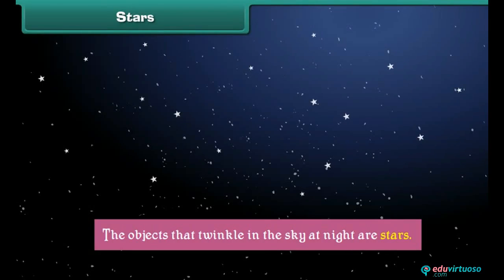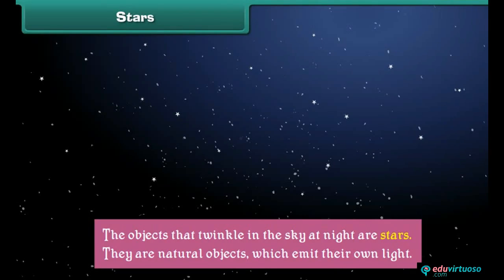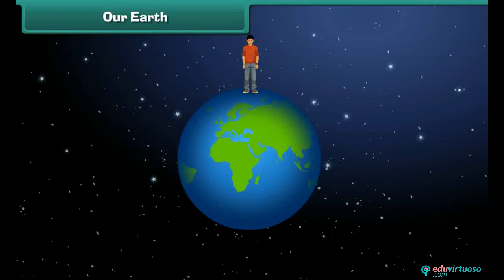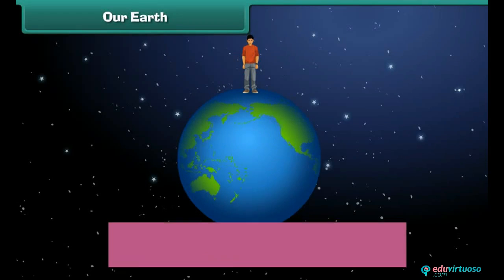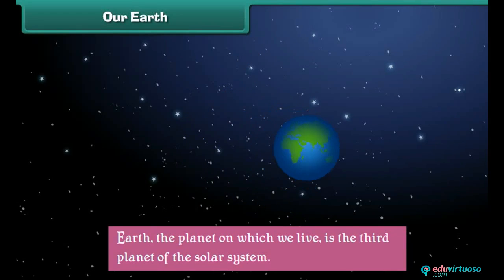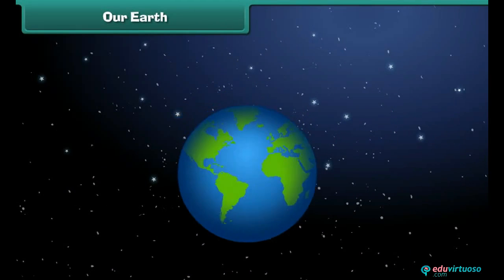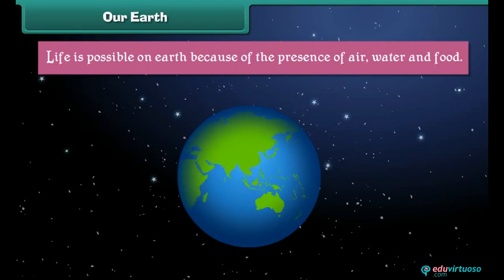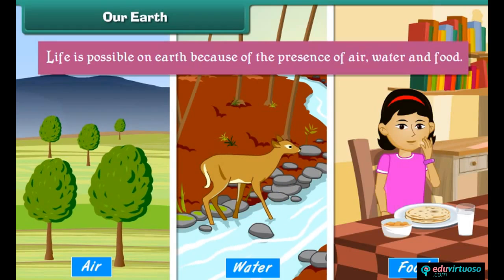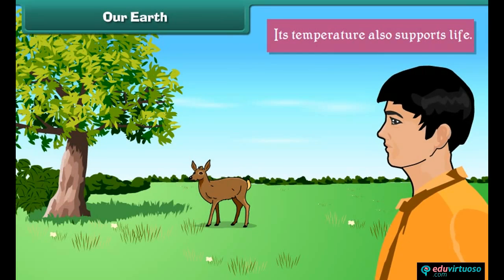Stars: the objects that twinkle in the sky at night are stars. They are natural objects which emit their own light. The Sun is also a star. Earth, the planet on which we live, is the third planet of the solar system. Life is possible on Earth because of the presence of air, water, and food, and its temperature also supports life.